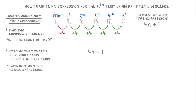So to summarize: because this sequence increases by 4 each time, we put 4n, and then because the imaginary term before the first term would be positive 1, we put plus 1 on the end, to get 4n plus 1.